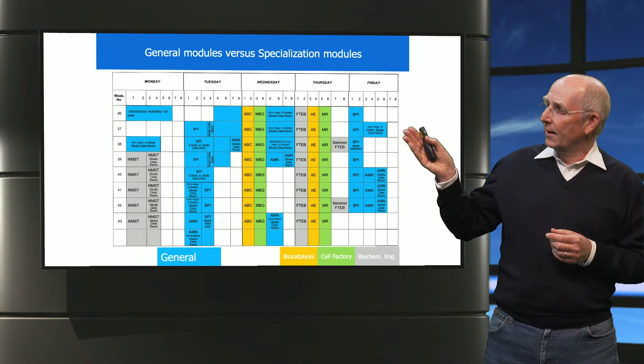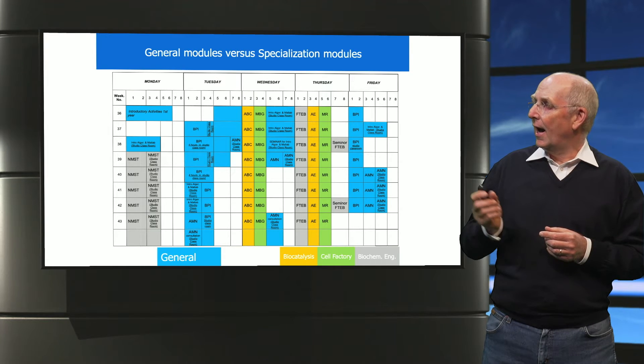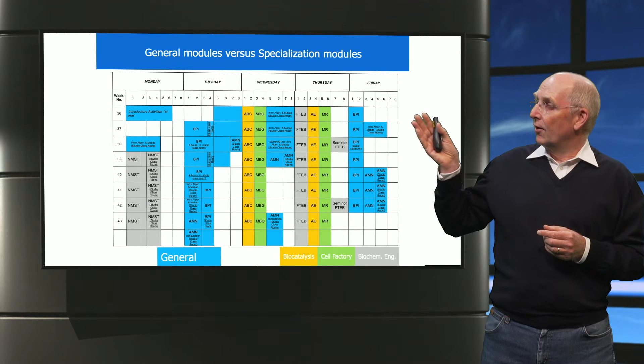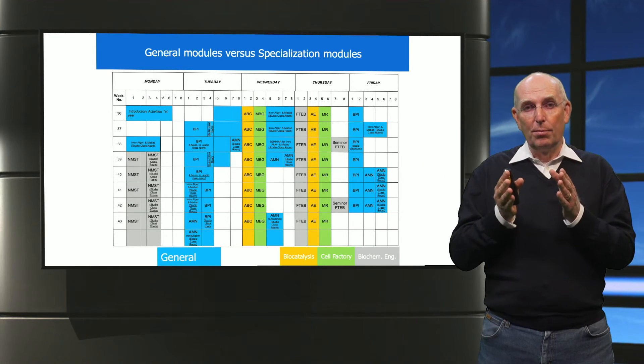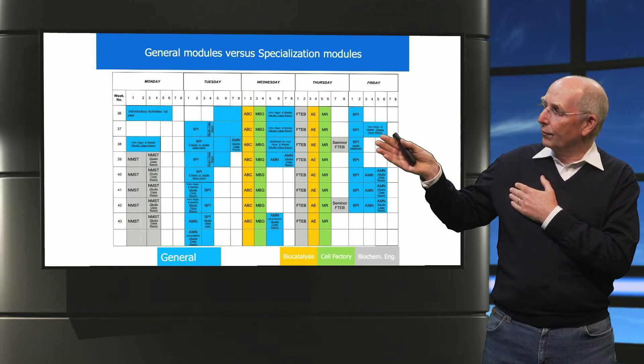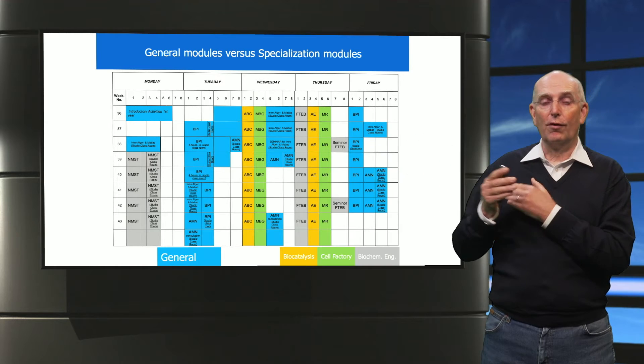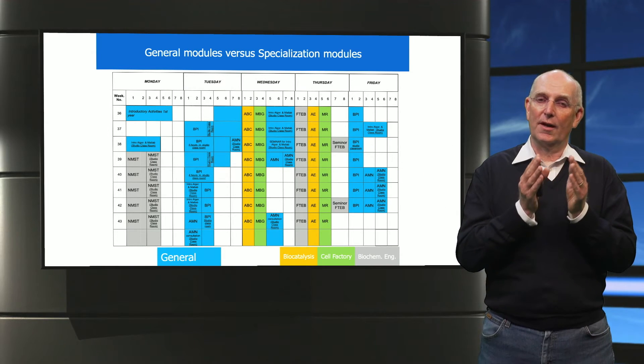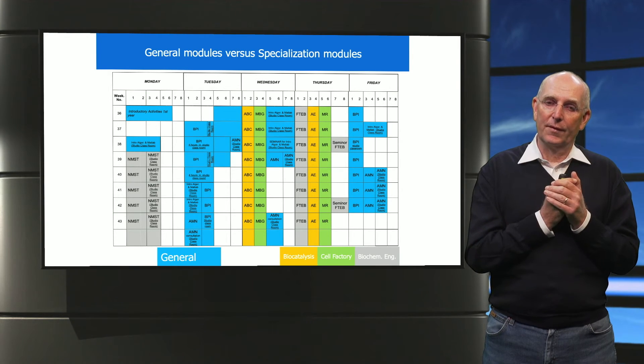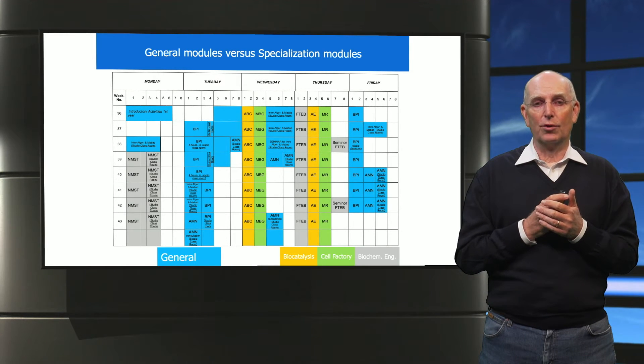Our program is set up in such a way that you can also delay your choice slightly and follow the process in a different way. First of all, we have a general part in blue, and we have the three different specializations. The three different specializations are in the program in such a way that you can follow two specializations initially—they're not planned at the same time. This ensures that you have the possibility to make up your mind during the first semester to see which part exactly you would like to follow.